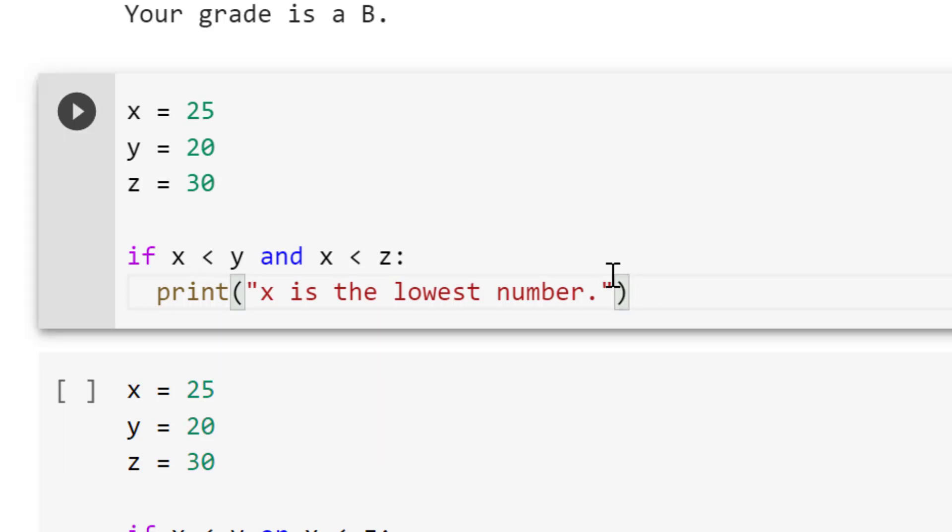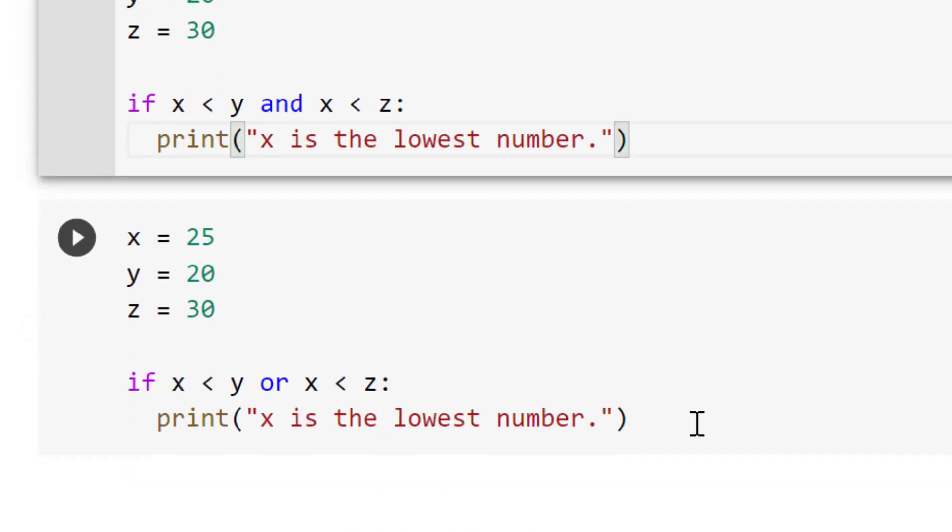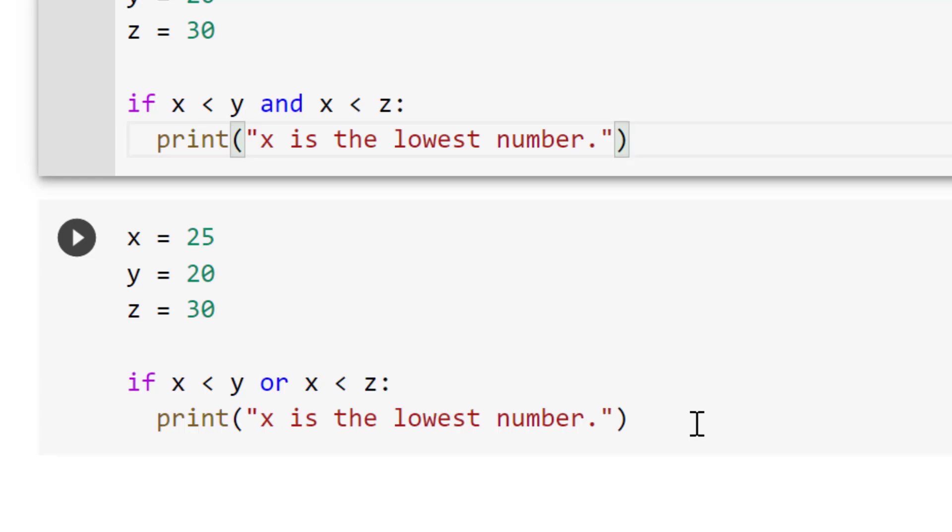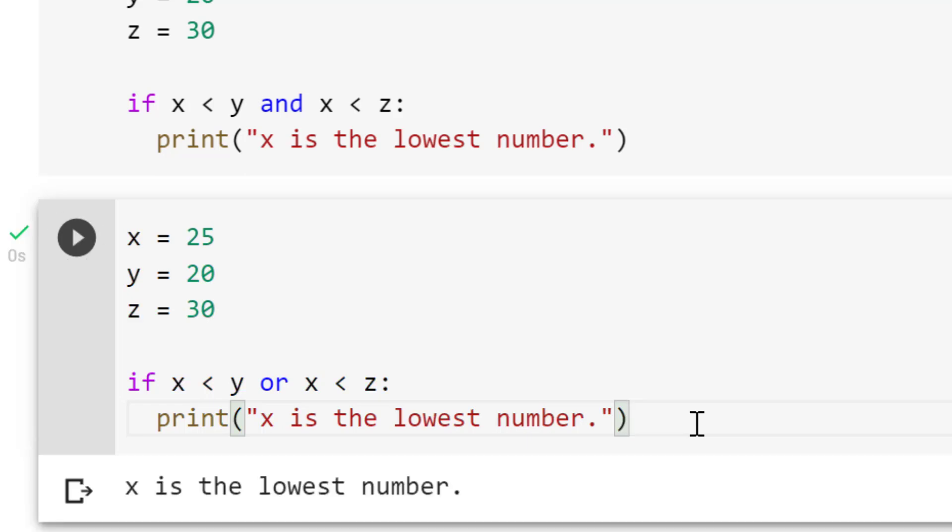So what I'm going to do is try to run this, like Control-Enter, and yeah, nothing gets printed because both of the conditions have to be met at the same time. Only one of two were met. And if we were to change this to say or, is x less than y or is it less than z? If one of those conditions are true, then we're good. Let's try that. And yeah, there we go. It's not, x is not really the lowest number in this case, but only one of the conditions is true. But you get the idea. So, and both of the conditions have to be met and or just one of them.